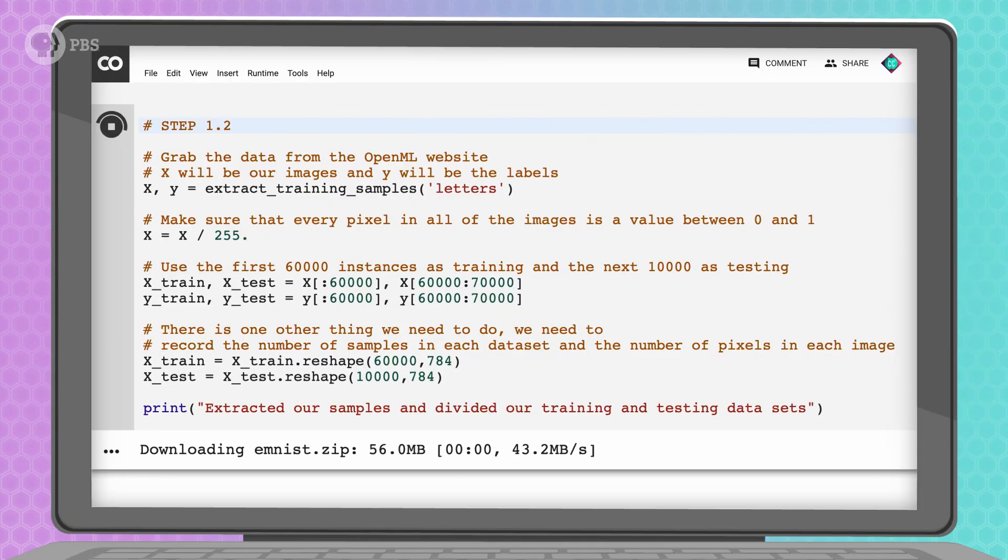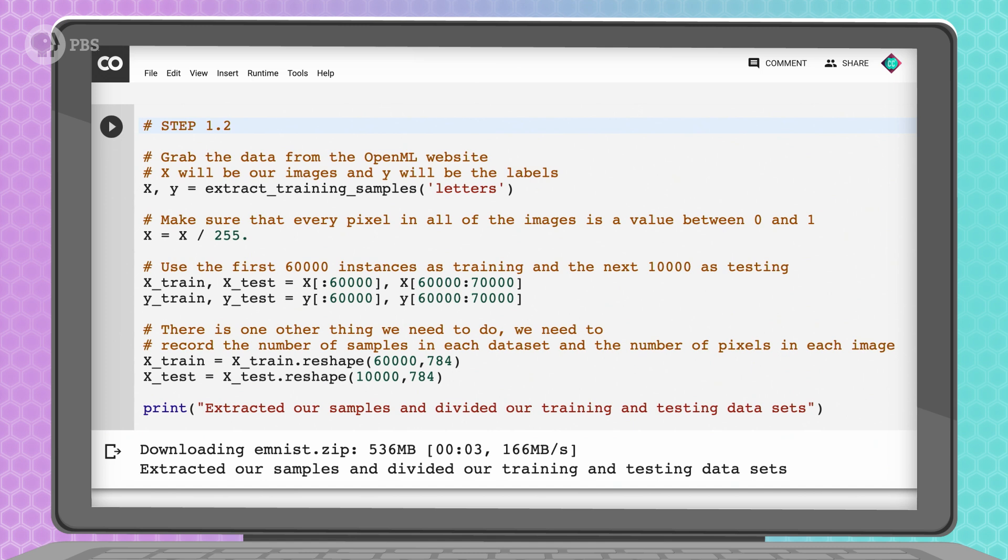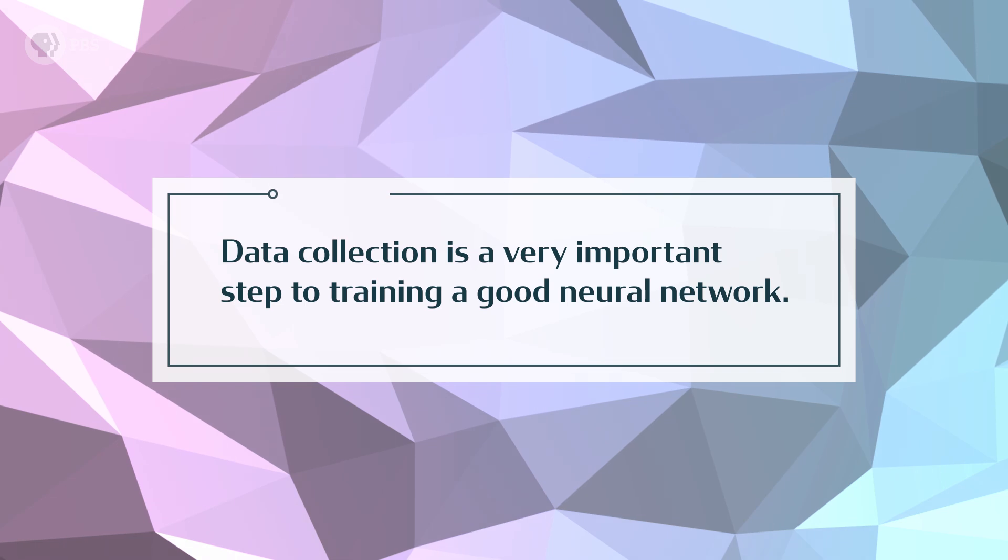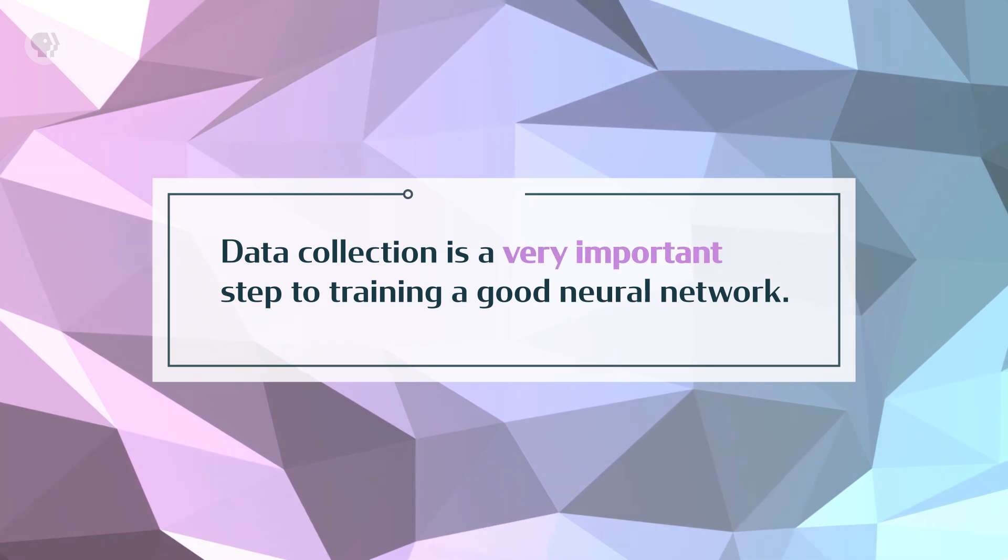So, while that's happening, I want to clarify that EMNIST is a luxury. There aren't many already existing datasets where you have this much labeled data to use. In general, if we try and solve other problems, we have to think hard about how to collect and label data for training and testing our networks. Data collection is a very important step to training a good neural network. In this case, though, we've got plenty to use in both sets.